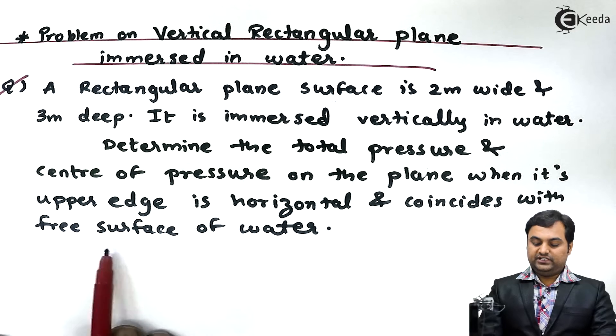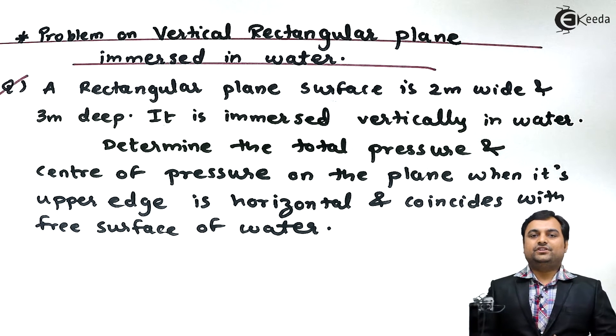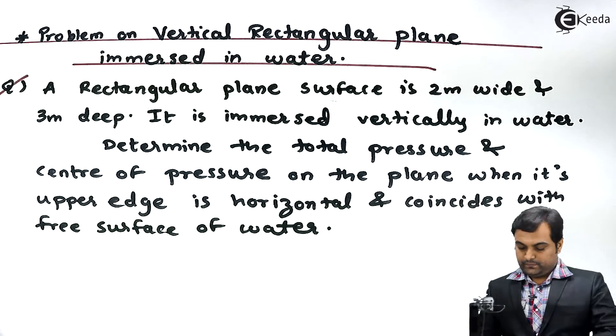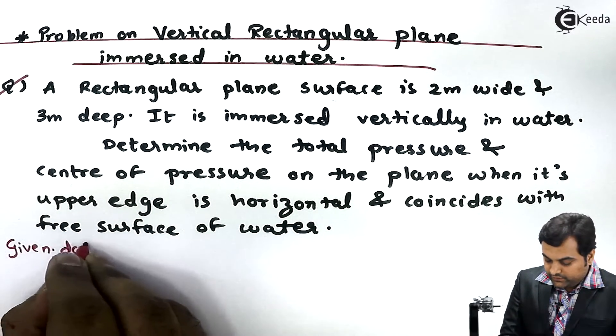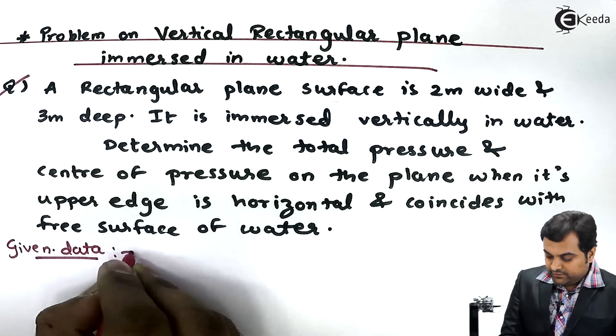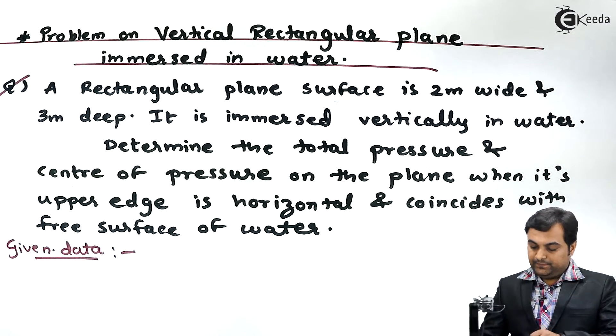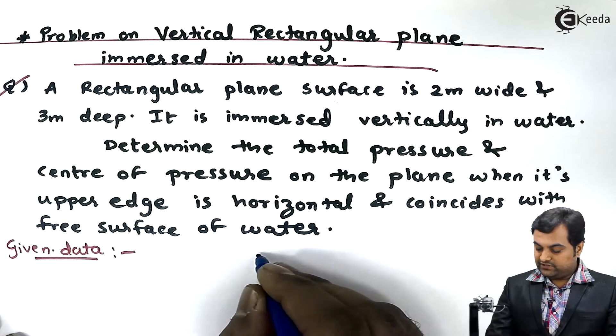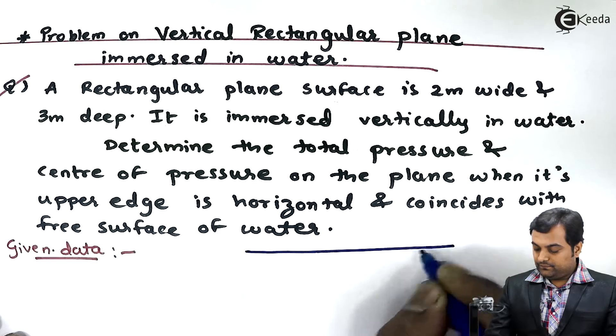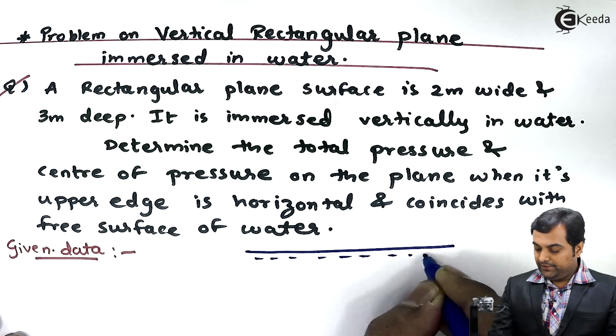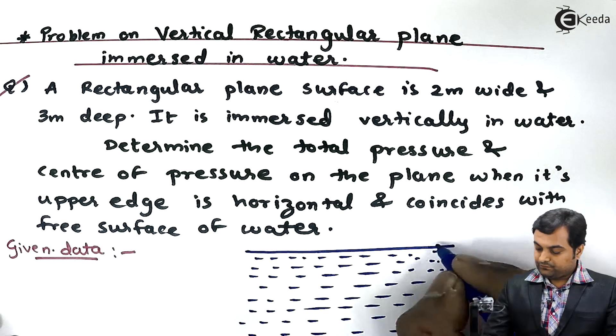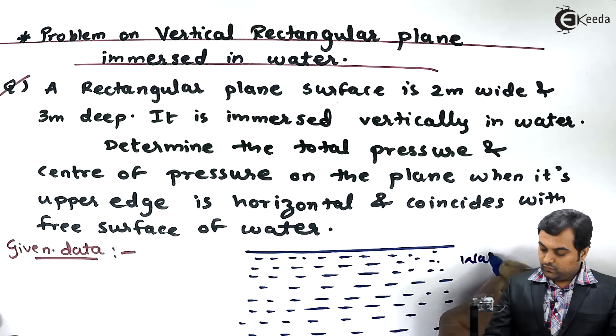So this is the question which we have. Now whatever is given here I will write that in the form of data first. In the data here it is given that a rectangular plane surface is immersed vertically in water, so first I will draw a water body.